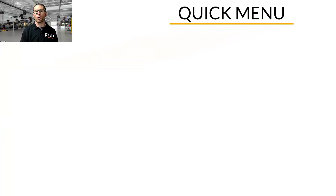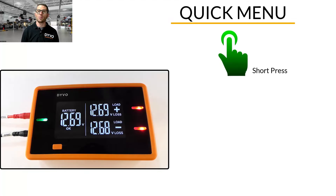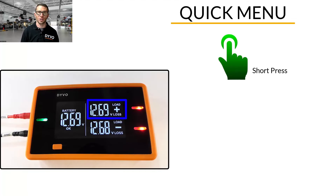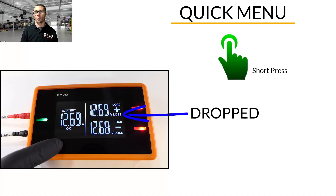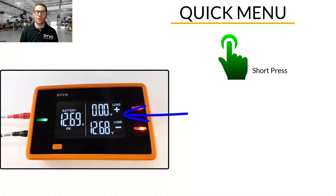Let's dive into the quick menu. Short pressing the mode button changes how the positive channel displays voltage. When you see V loss on the screen, the value shown is how much voltage is being dropped or lost across the circuit. Short press the mode button and now you only see V on the screen — this is the available voltage in a circuit.